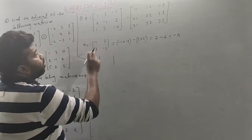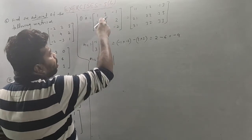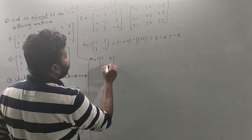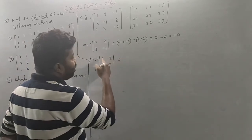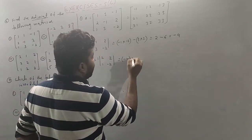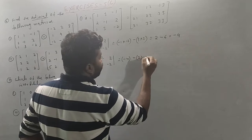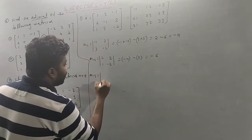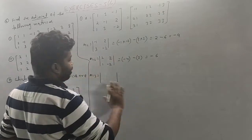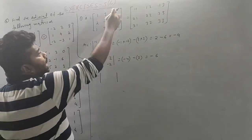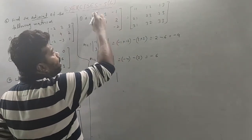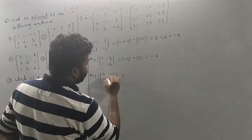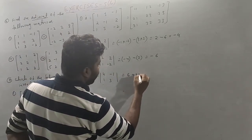So A(1,2): the element A(1,2) is the same. So: 2, 2, 2, 1, minus 2. That is your 2, so that is minus 6. Then M(1,3): we take the relevant column — 2, minus 1, 1, 3 — so that is your 7.